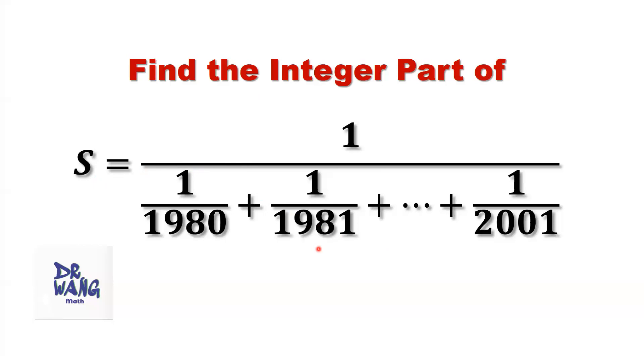Let's analyze the denominator of S first. The denominator is the sum of 22 terms. Here, you can count this way: 1980, 1981, 1982 until 2001. Totally, we have 22 terms here.